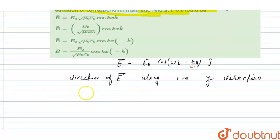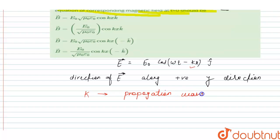And k is the propagation wave vector. The direction of the propagation wave vector is along the positive x direction.